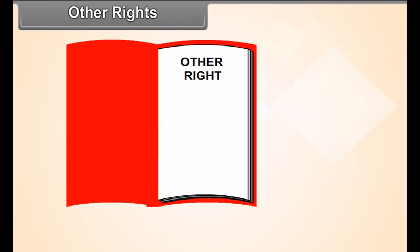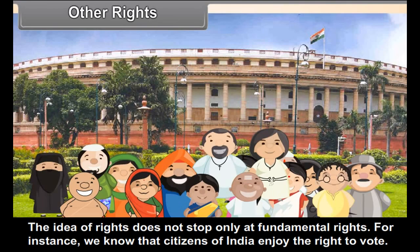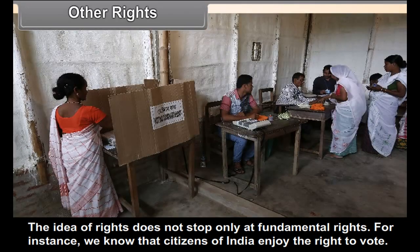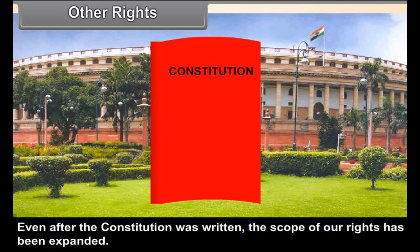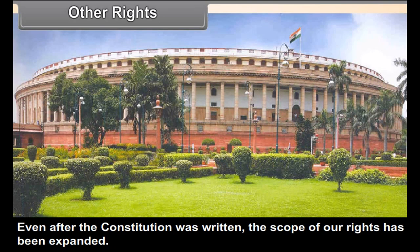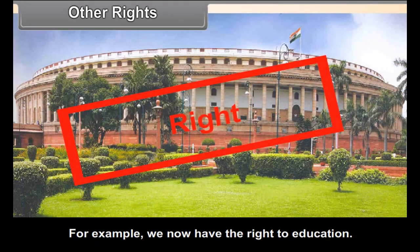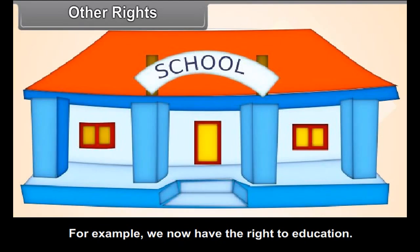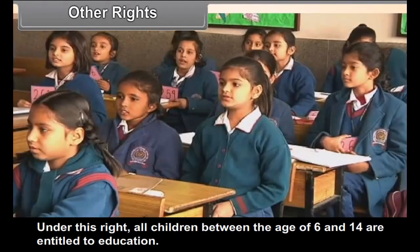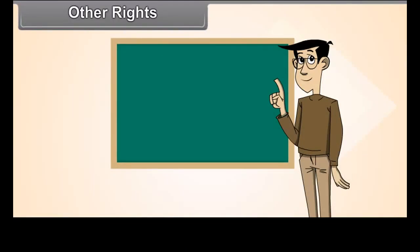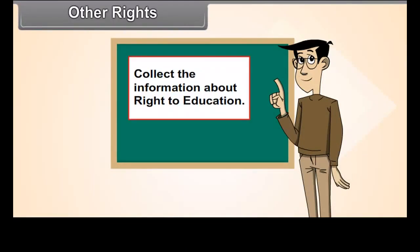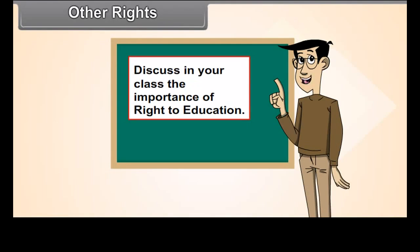Other rights: The idea of rights does not stop only at fundamental rights. For instance, citizens of India enjoy the right to vote. This right is not listed in fundamental rights, but it is part of our constitutional rights. Even after the constitution was written, the scope of our rights has been expanded. For example, we now have the right to education. Under this right, all children between the age of 6 and 14 are entitled to education. Activity: Collect information about the right to education and discuss in your class its importance.